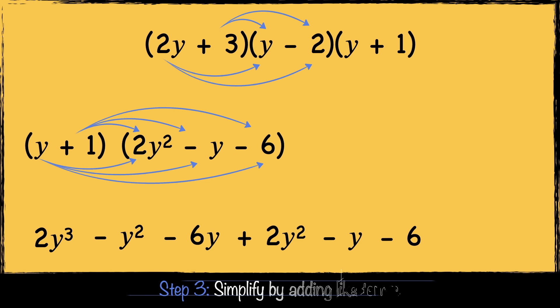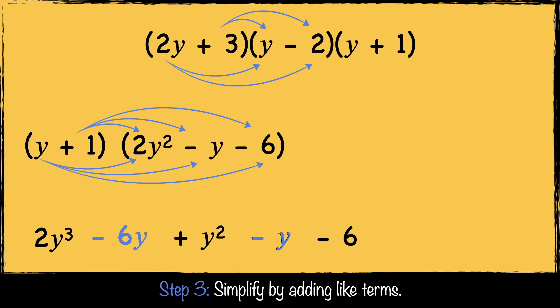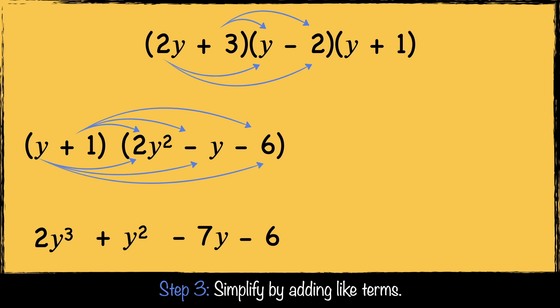Now we're on to step 3, where we simplify by combining like terms. Minus y squared and minus 2y squared combine to make minus 3y squared — wait, minus y squared plus 2y squared combine to make plus y squared. Minus 6y and minus y combine to make minus 7y. Now we have expanded all three brackets to get 2y cubed plus y squared minus 7y minus 6.